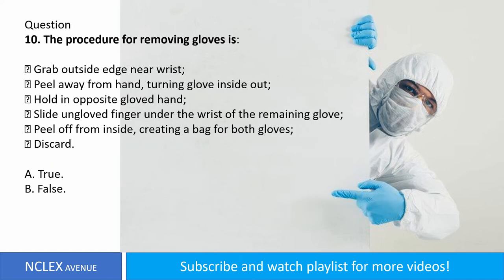Question number ten. The procedure for removing gloves is: grab the outside edge near the wrist, peel away from hand turning the glove inside out, hold in the opposite gloved hand, slide an ungloved finger under the wrist of the remaining glove, peel off from inside creating a bag for both gloves, then discard. A. True. B. False. Answer: letter A. True.